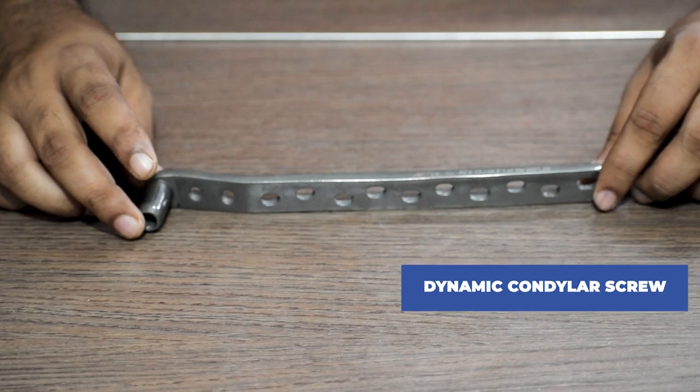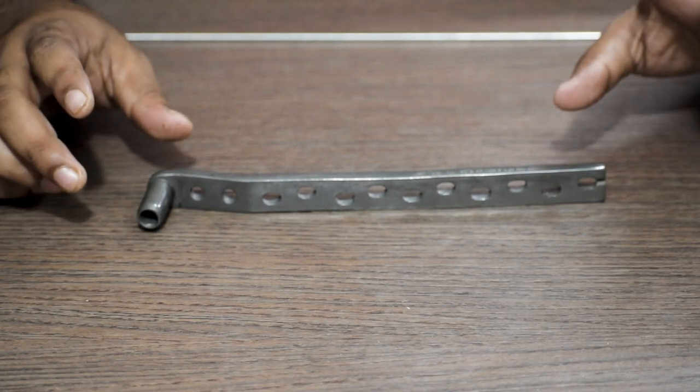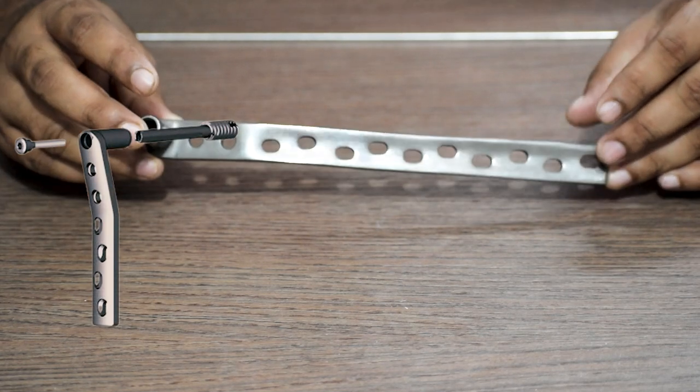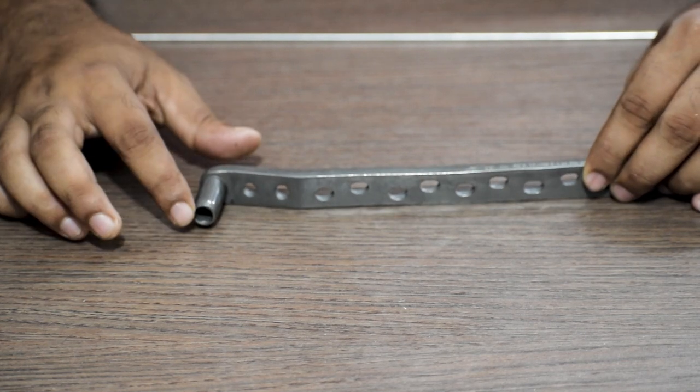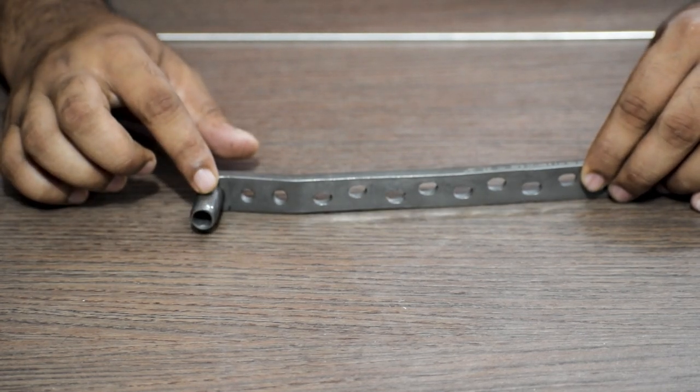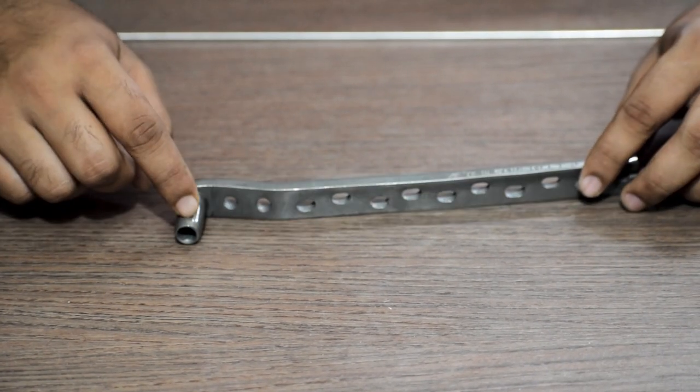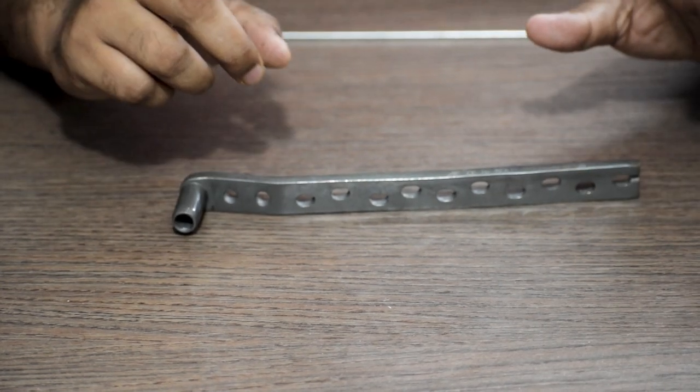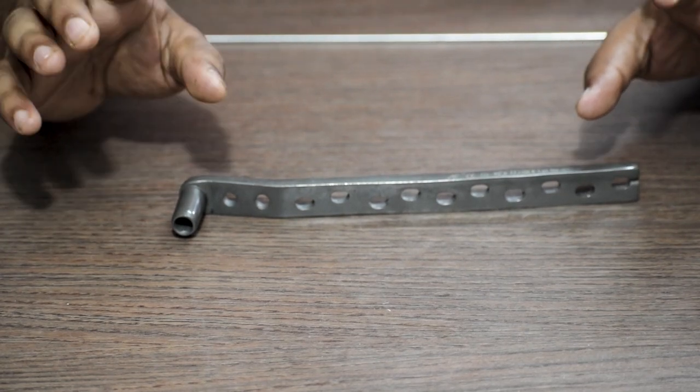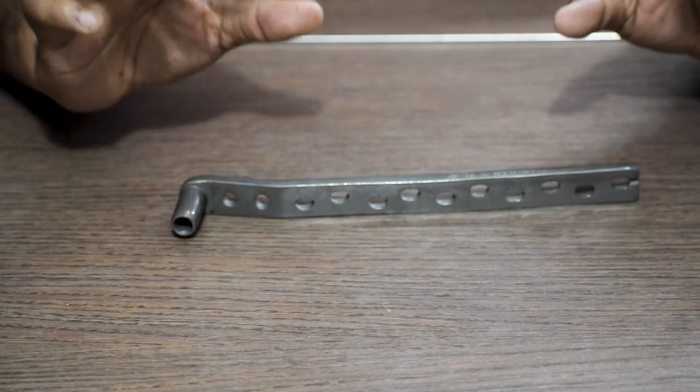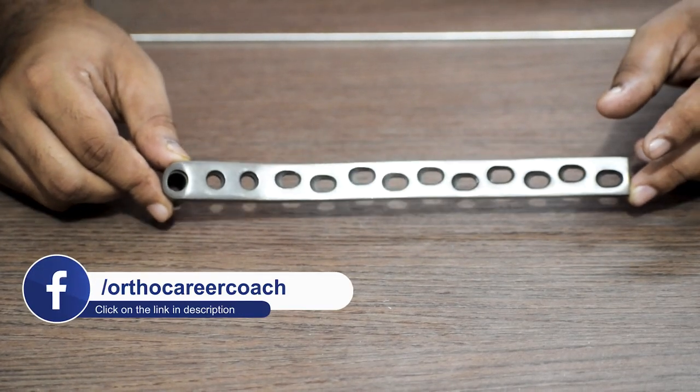Today we will discuss about DCS or dynamic condylar screw. This plate has got three components which we will discuss one by one. This is called the barrel and the barrel plate angle is 95 degrees. It is available in different sizes from four holes up to 14 holes with two holes kept in between: four holes, six hole, eight hole, ten hole, twelve hole, and fourteen holes. These holes are all non-locking holes.